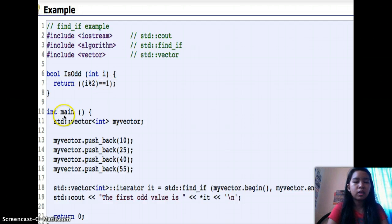My int main: std::vector<int> myvector. myvector.push_back 10, 25, 40, and 55.